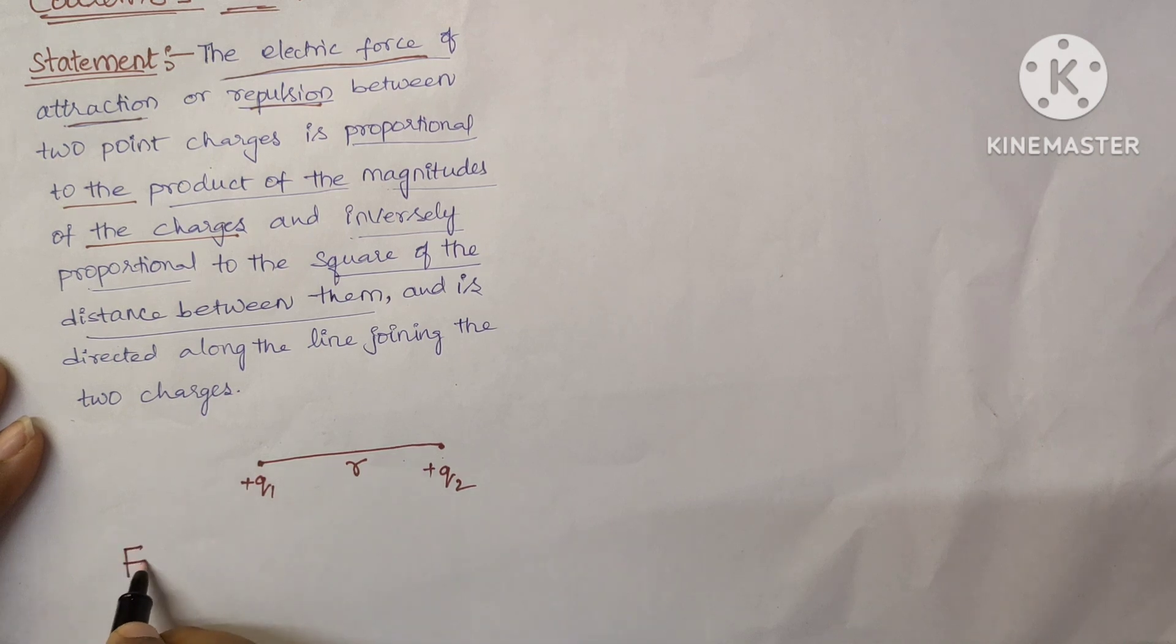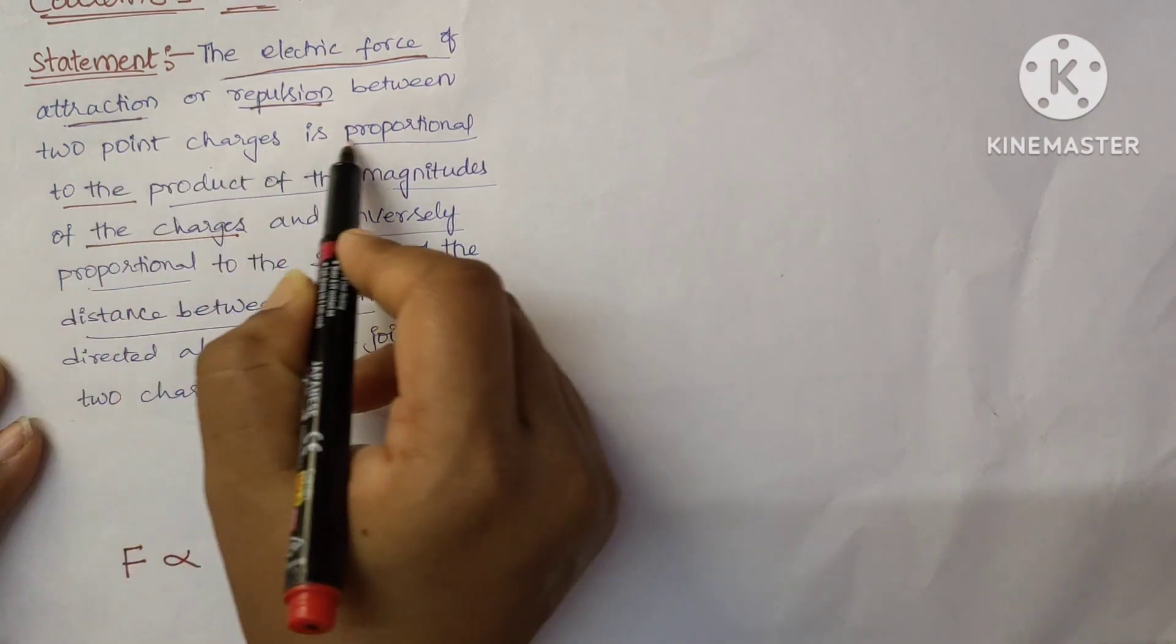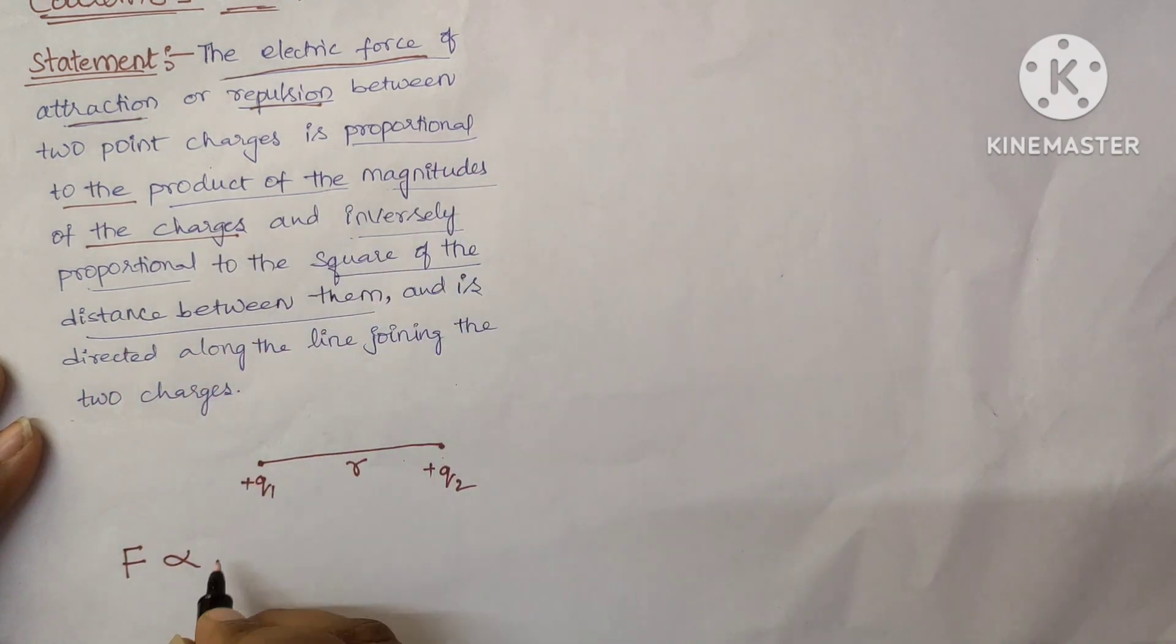Now, electric force of repulsion. Here, we consider the two positive charges, so electric force is a repulsive force and is directly proportional to the product of the magnitudes of the charges. Let's say magnitude of Q1 and magnitude of Q2. So, F is directly proportional to the magnitude of Q1 and Q2. Let it be equation number 1.